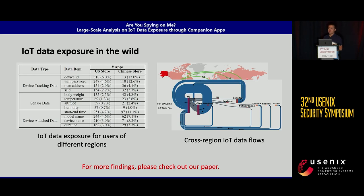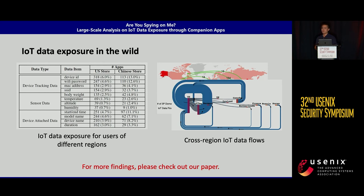In addition to understanding the landscape, we were also able to conduct additional analyses. For example, we can understand IoT data exposure for users in different regions by analyzing applications across regions. We can also analyze cross-region IoT data flows, which are particularly sensitive due to the different privacy policies enforced in different regions. There are many more findings enabled by our approach — if you are interested, please check out our paper.